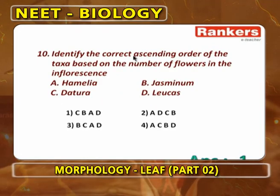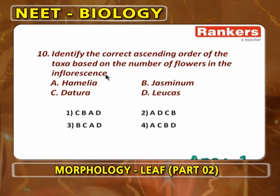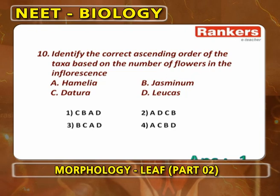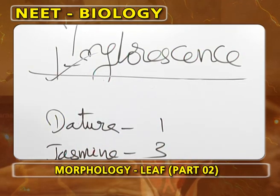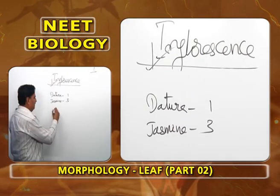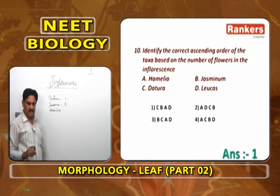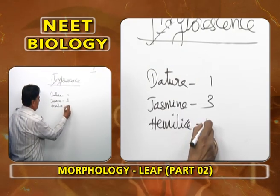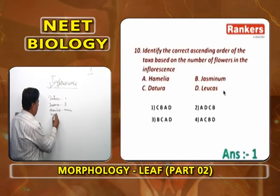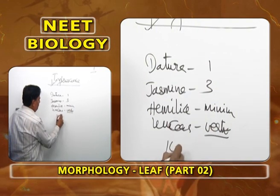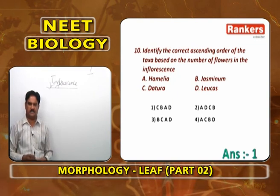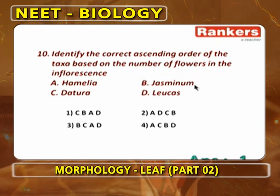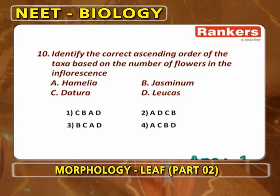Next: identify the correct ascending order based on number of flowers in the inflorescence. Answer is CBAD. Datura has terminal solitary cyme — one flower. Jasminum has simple cyme — three flowers. Helianthus has monocasial helicoid cyme — minimum but more than three. Leucas shows verticeloster — at each node, 14 flowers. So ascending order: Datura (1), Jasminum (3), Helianthus (fewer than 14), Leucas (14). Answer: C, B, A, D.